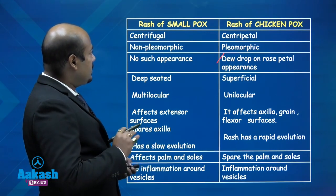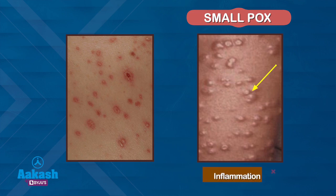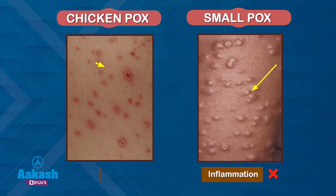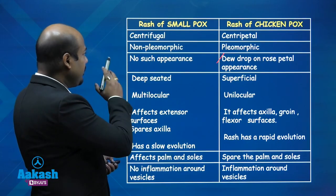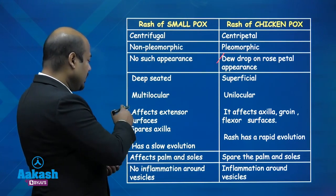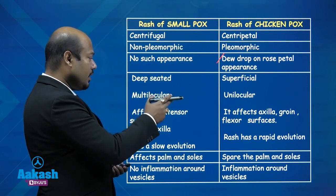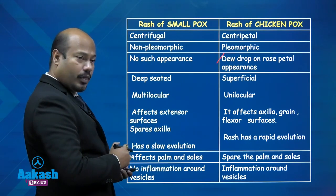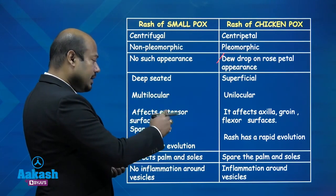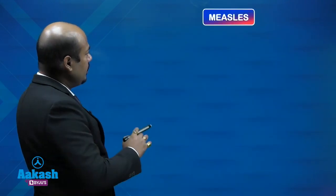In smallpox there is a deep-seated rash but no inflammation surrounding it, whereas in chickenpox there is inflammation surrounding the vesicles. To summarize: smallpox — centrifugal, deep-seated, no inflammation, affects extensor surface, affects palm and sole; chickenpox — centripetal, superficial, inflammation present, affects flexor surface, axilla, and groin, spares palm and sole.